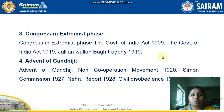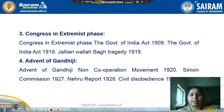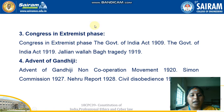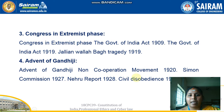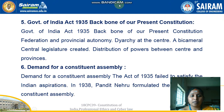The third milestone is Congress in the extremist phase. This includes the Government of India Act 1909, the Government of India Act 1919, the Jallianwala Bagh Tragedy 1919, the advent of Gandhiji, the Non-Cooperation Movement 1920, the Simon Commission 1927, the Nehru Report 1928, and the Civil Disobedience Movement 1930.